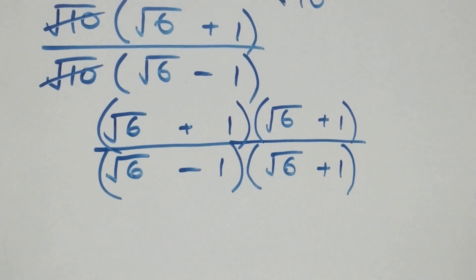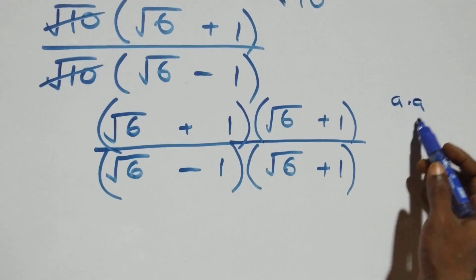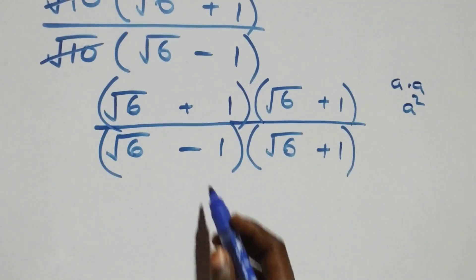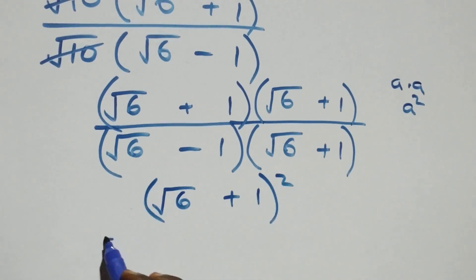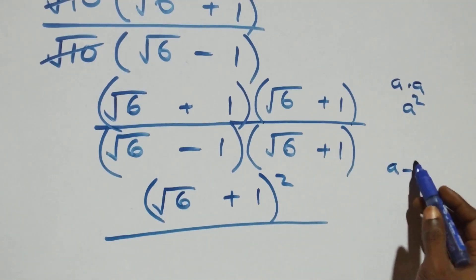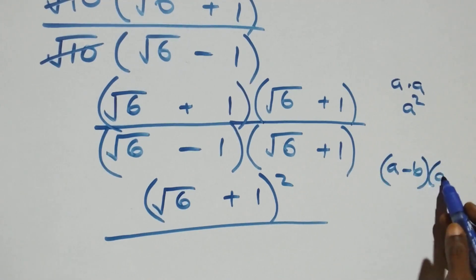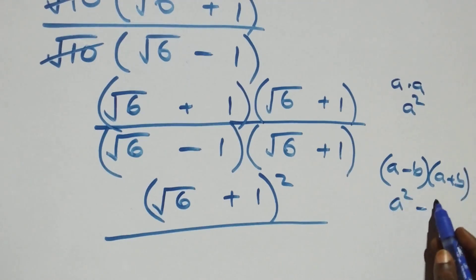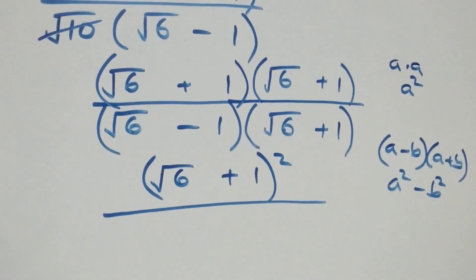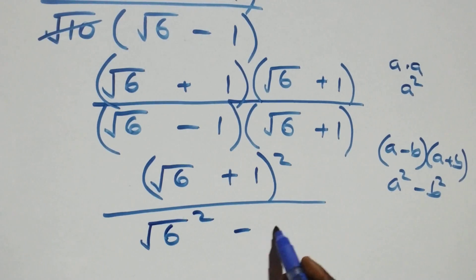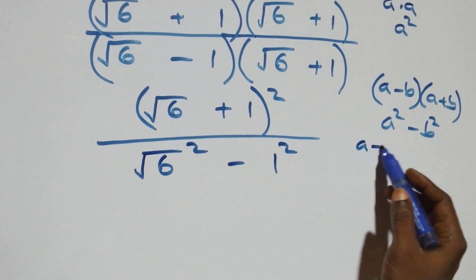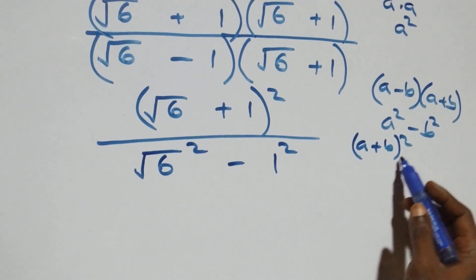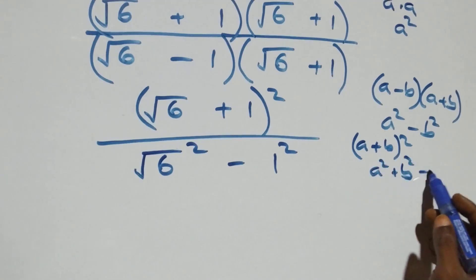The rule used here is that a times a is the same as a squared. So the numerator becomes root six plus one, all squared. The denominator follows the identity a minus b times a plus b, which equals a squared minus b squared. Here a is root six and b is one, giving root six squared minus one squared. The expansion of a plus b all squared is a squared plus b squared plus 2ab.